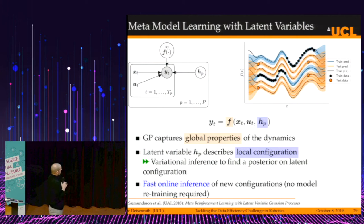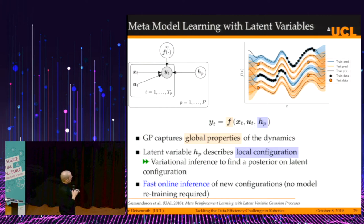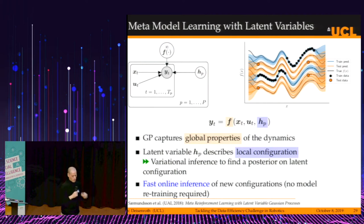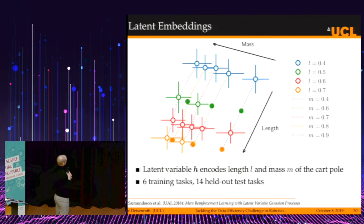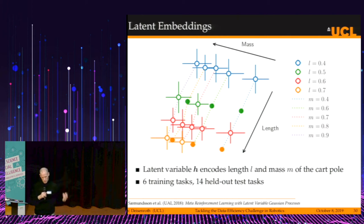No model retraining is required to get these function distributions. The blue curves show training predictions and the orange ones are zero-shot learning test predictions. Now we can put this into the context of reinforcement learning, going back to the cart-pole system as a running example.